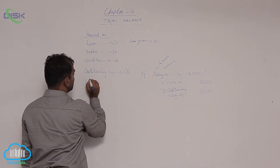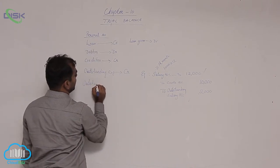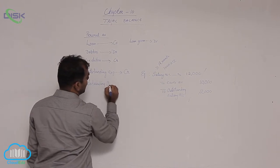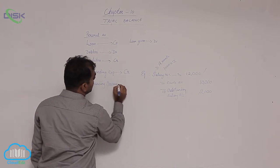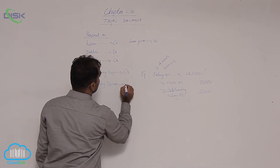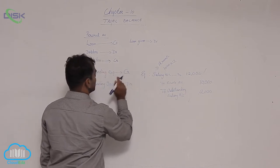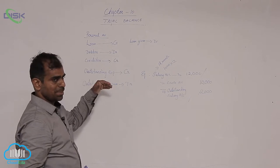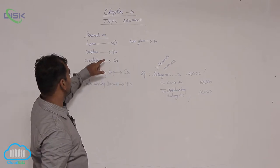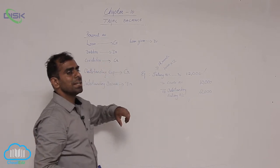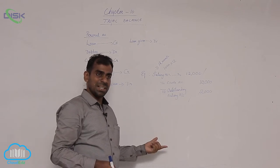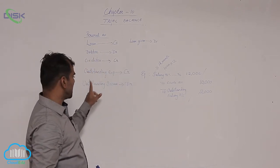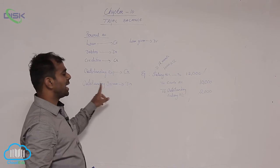Similarly, opposite to outstanding expense is outstanding income. Outstanding income shows debit balance — because income is opposite of expense. When expense shows debit balance, income shows credit balance. So, outstanding expense shows credit balance, while outstanding income shows debit balance.